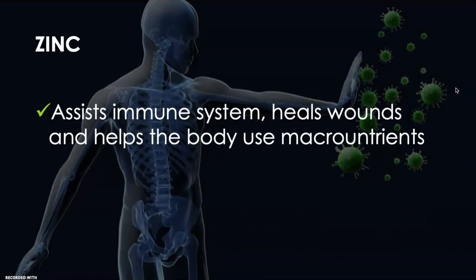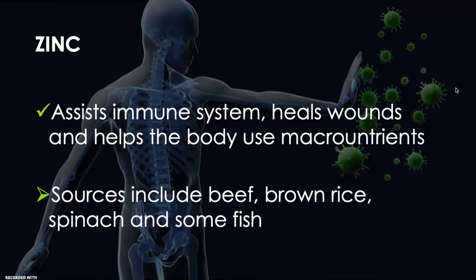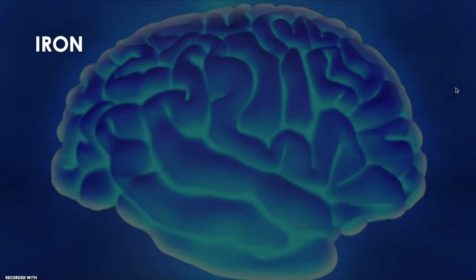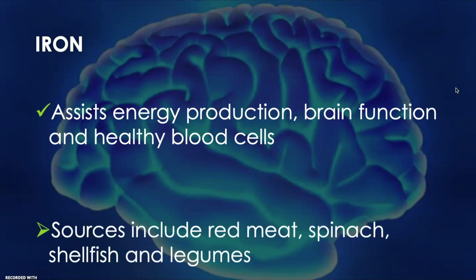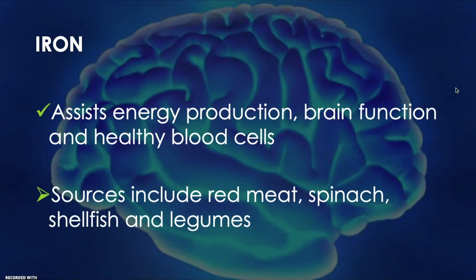Zinc assists the immune system, heals wounds, and helps the body use the macronutrients. Sources include beef, other meats, brown rice, spinach, and some fish. Next we have iron. Iron assists energy production, brain function, and healthy blood cells. Sources include red meat, spinach, shellfish, and legumes.